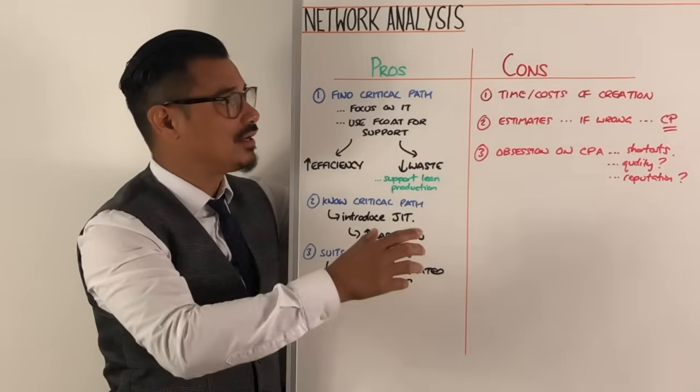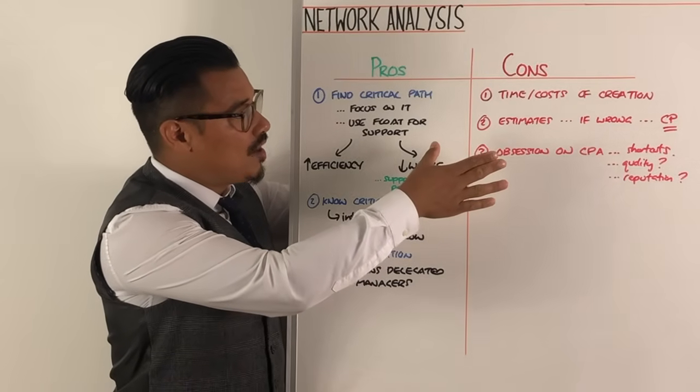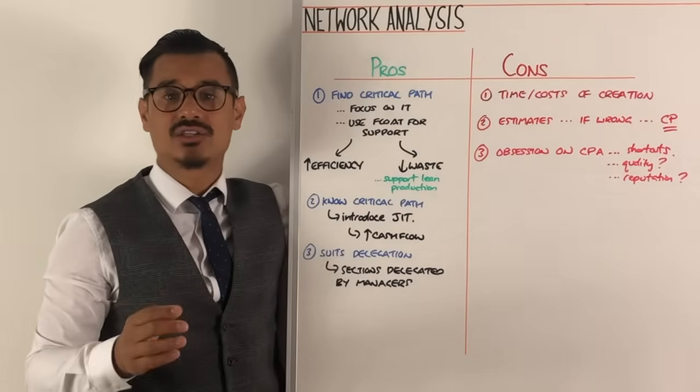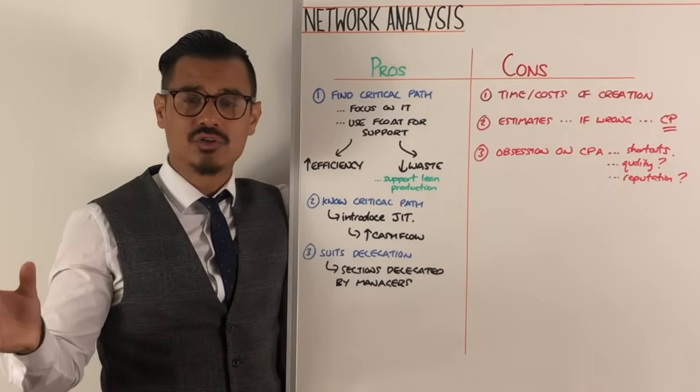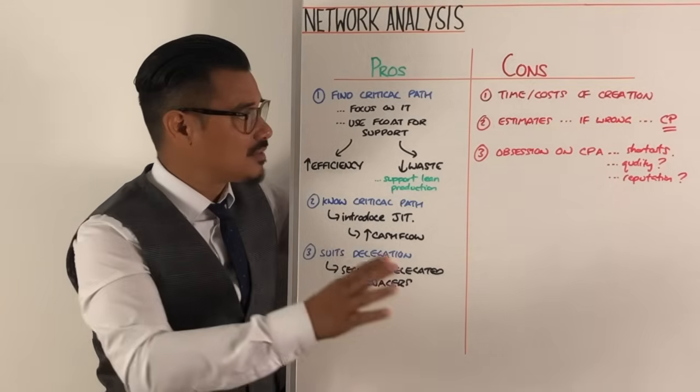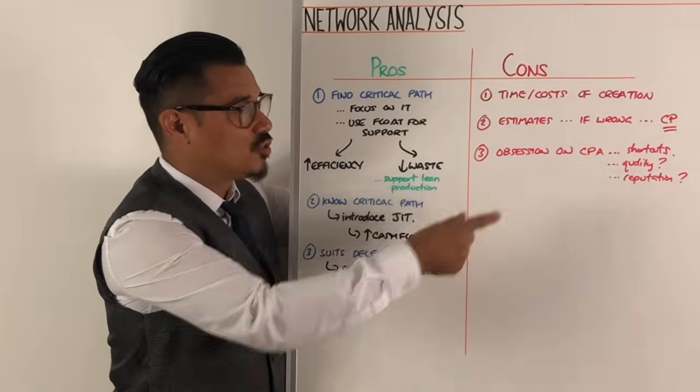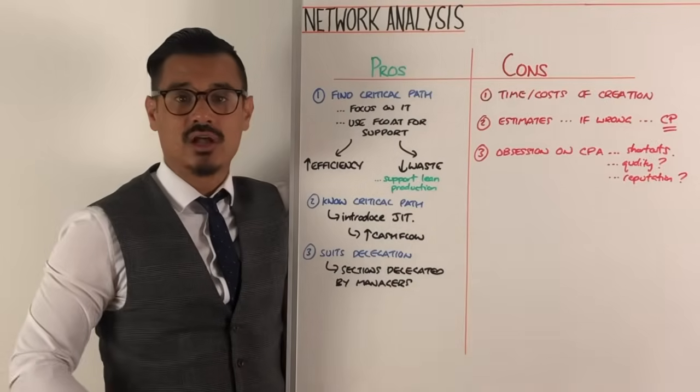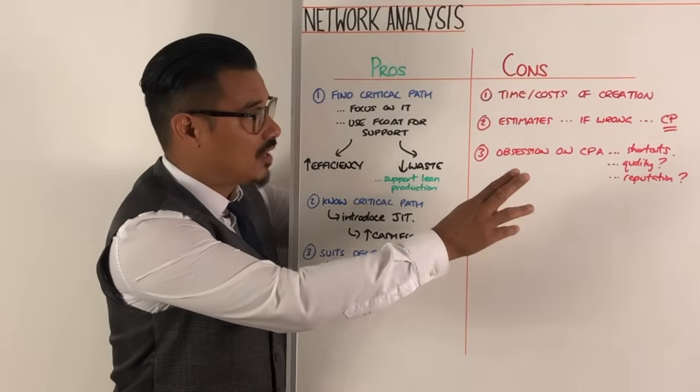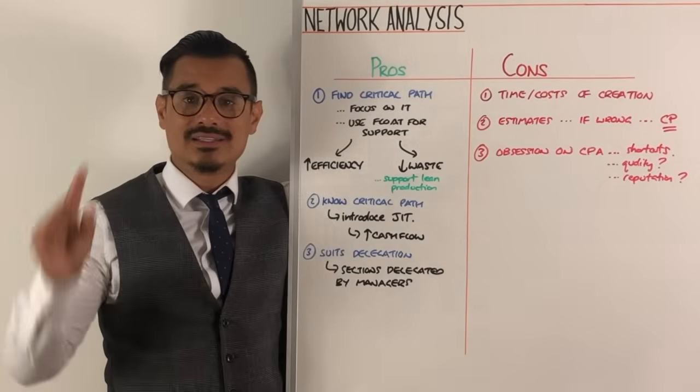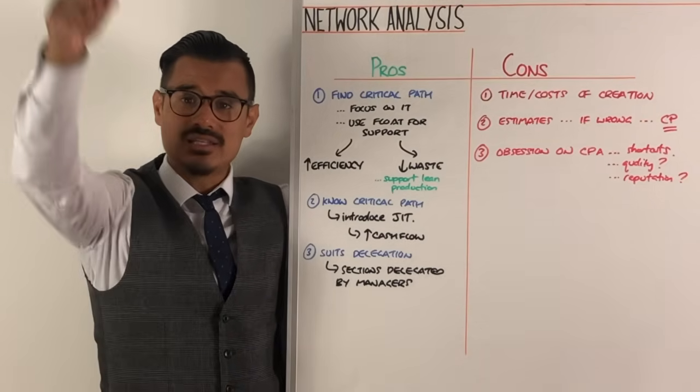Now the cons of network analysis, well firstly network analysis takes a lot of time to do, it costs money to do, you need someone with project management skills to create it. And the next thing is that what if the estimates are wrong? Because if the estimates are wrong for any of those tasks or the nature of those tasks, if they're sequential or if they are simultaneous, if you get that wrong it might mess up the critical path and then it's no longer actually the quickest route. So that's a problem there. So you need someone with skill and that can make accurate estimates. And the last thing is if you become so obsessed with the critical path and it's the only thing that matters, then it might lead to shortcuts along the way from managers or from subordinates that fear managers that they need to just keep on that critical path otherwise they're very much accountable for it. And shortcuts leads to lowering quality and if you get lowering quality and it hits the end customer then that could ruin reputation. So I hope that helps with network analysis and I'll see you in the next session.